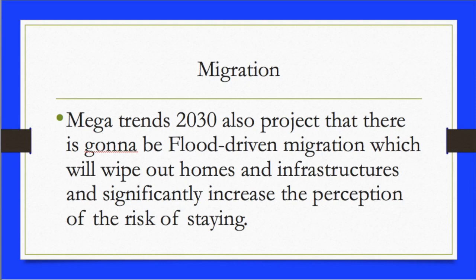Megatrends 2030 also projects flood-driven migration, which will wipe out homes and infrastructure and significantly increase the perception of the risk of staying.